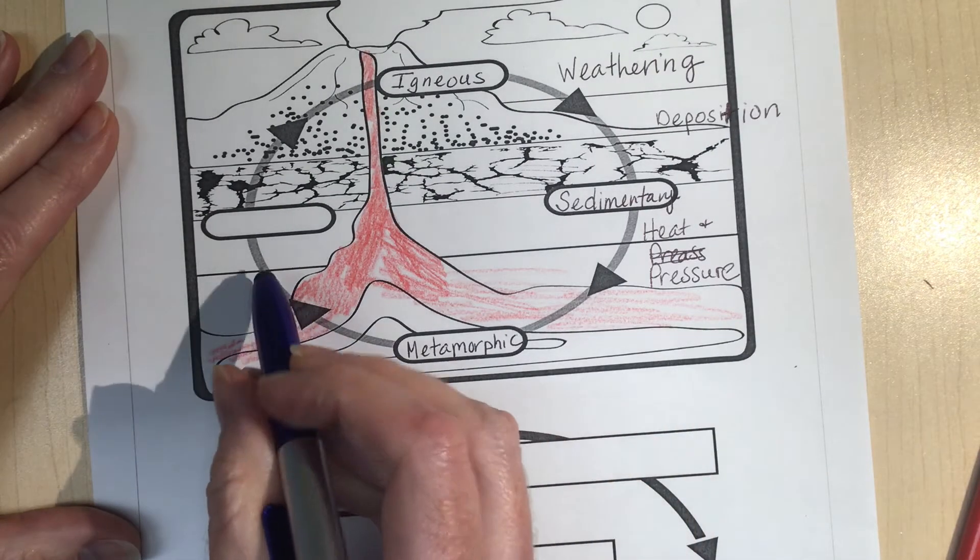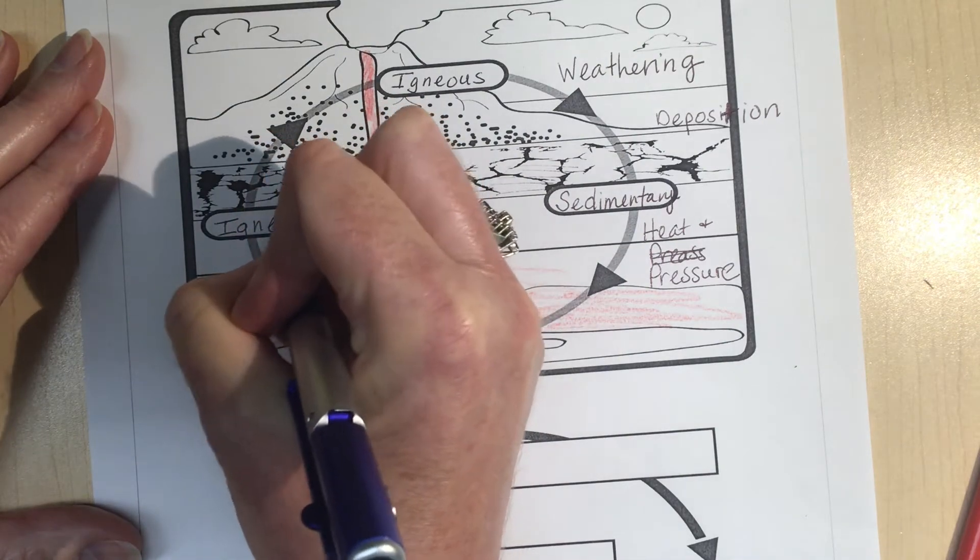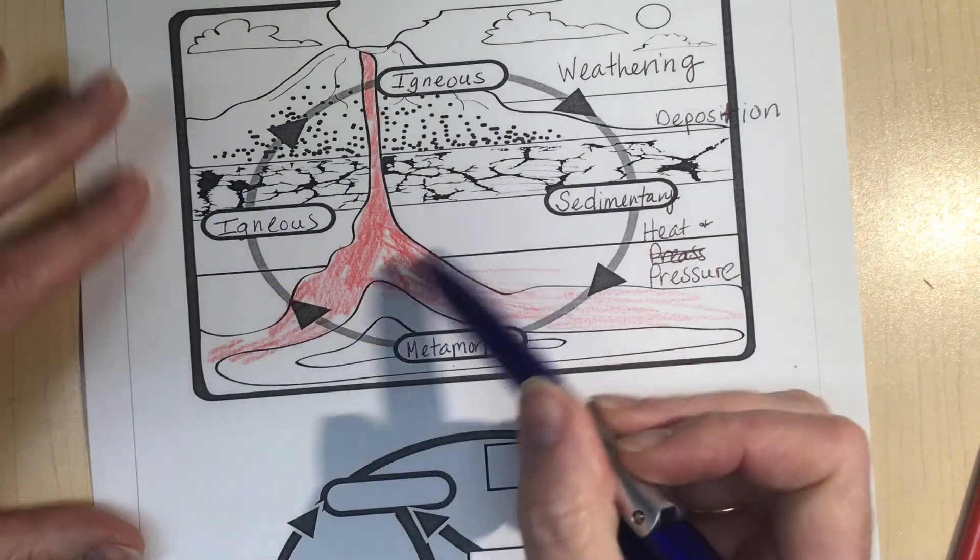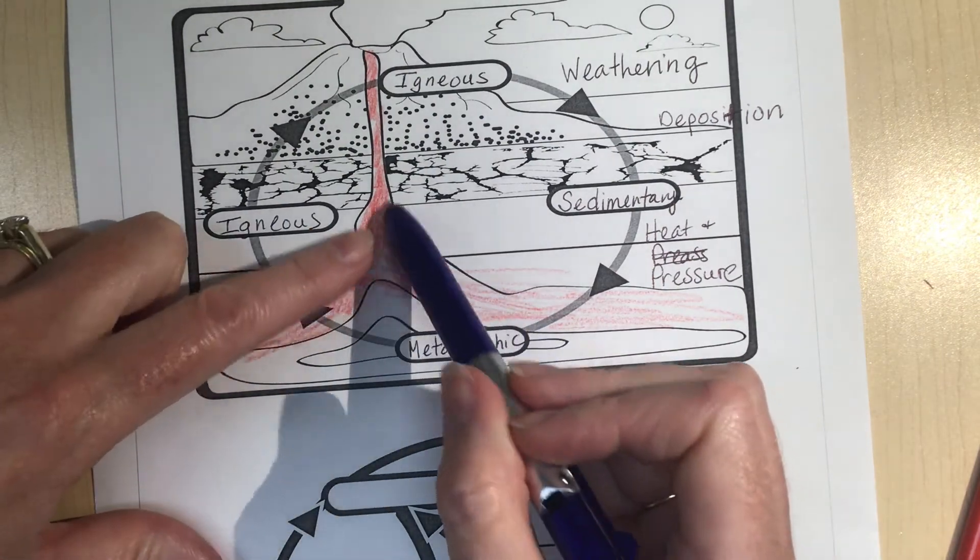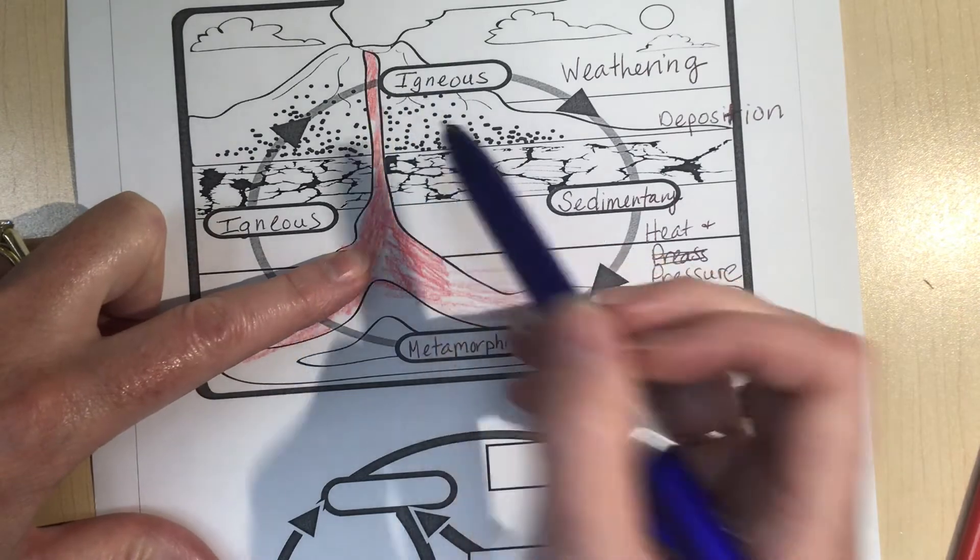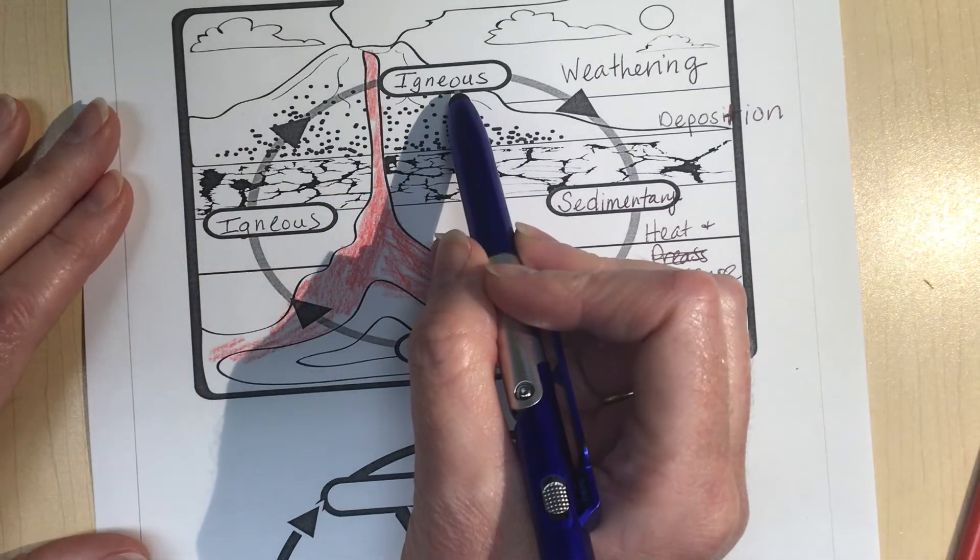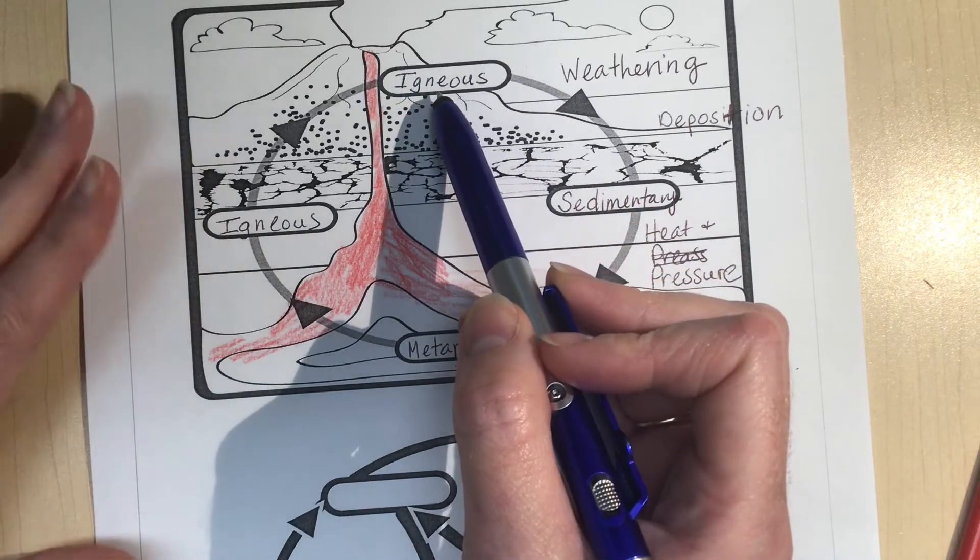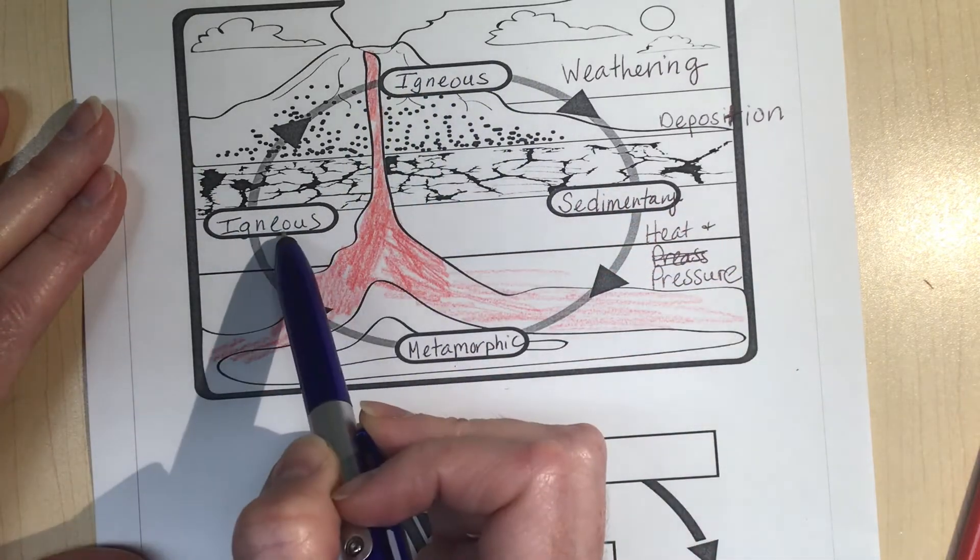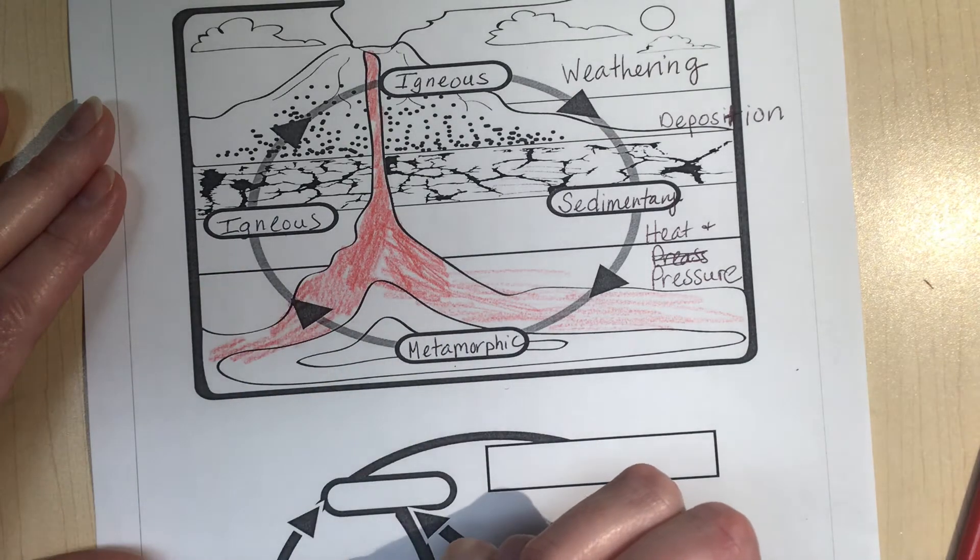And they can turn into igneous rock here. So we have igneous twice because igneous can come out of underground and the magma comes up like in a volcano. This particular type of igneous is called extrusive, you don't have to know that for this class. This type of igneous rock is called intrusive because it's made out of metamorphic rock.